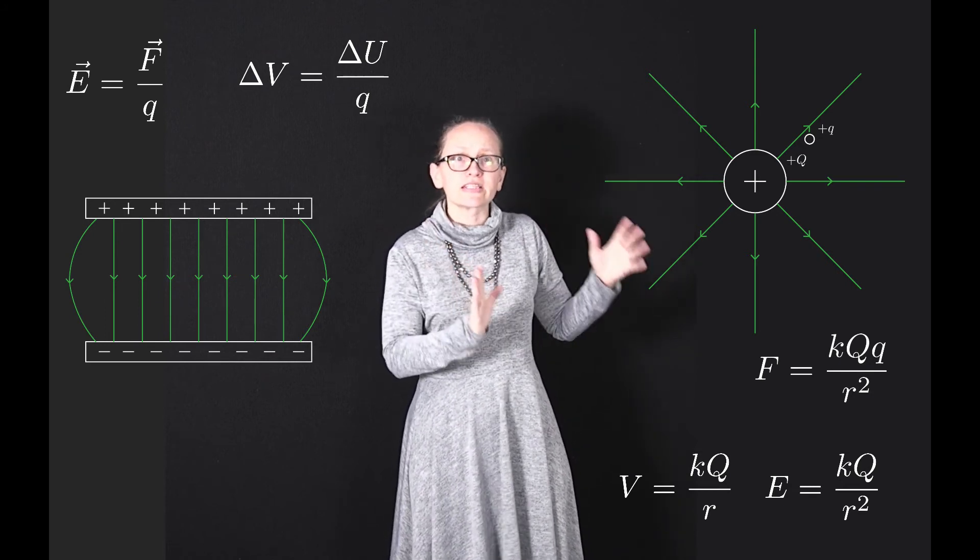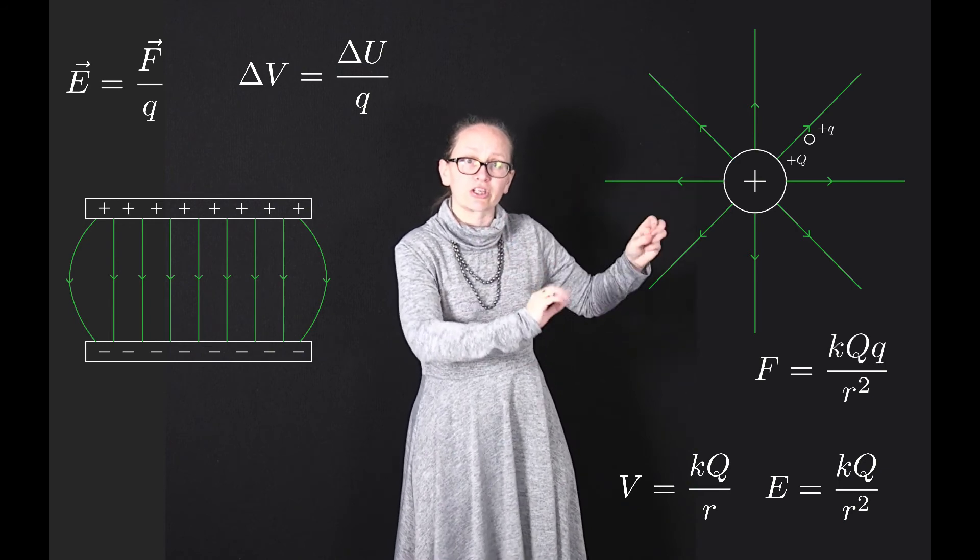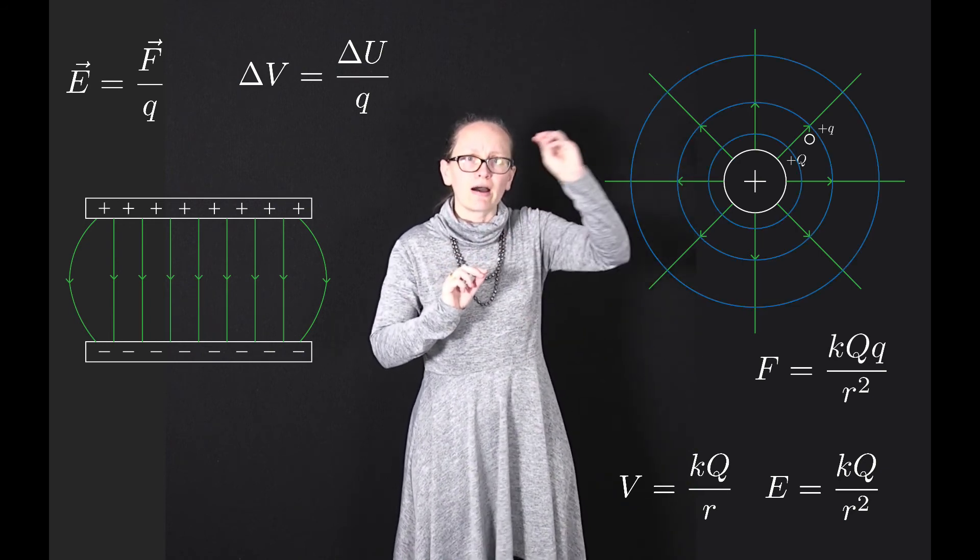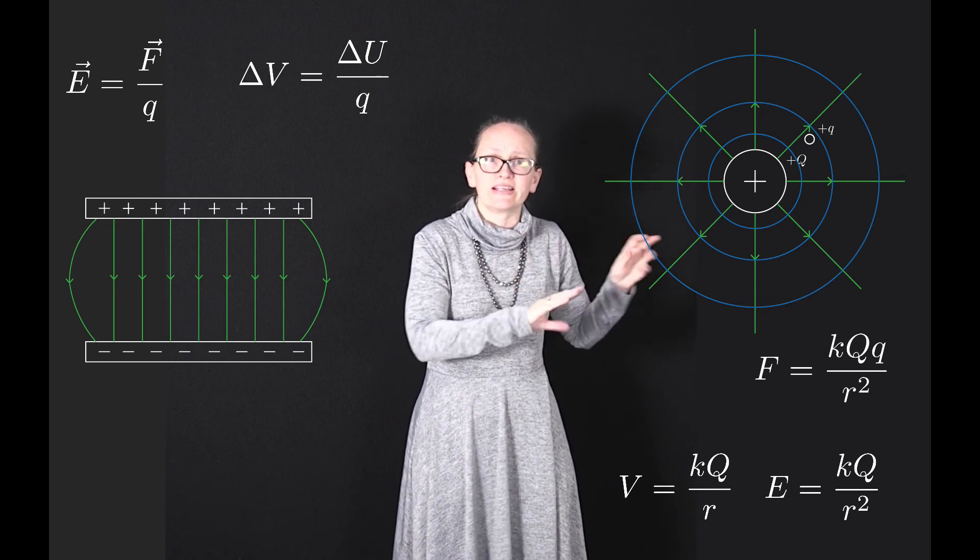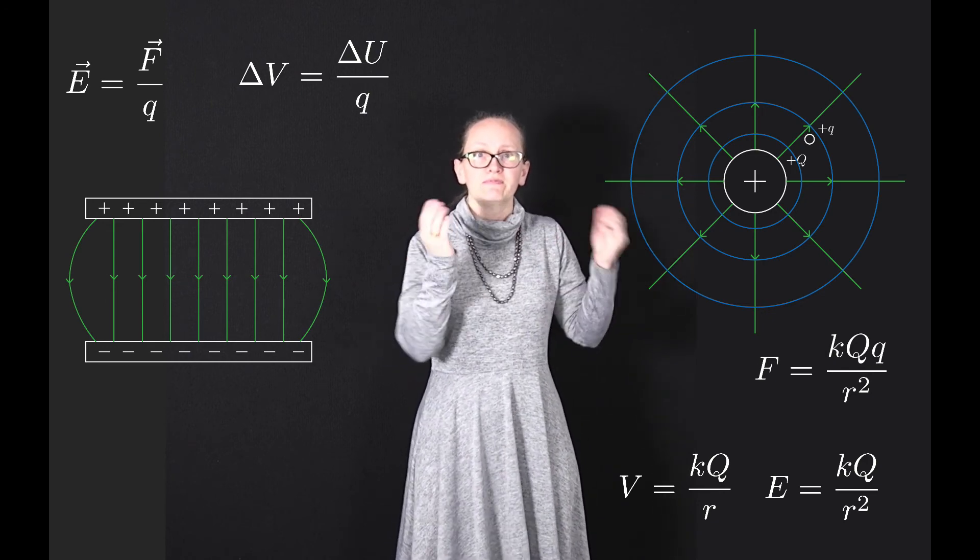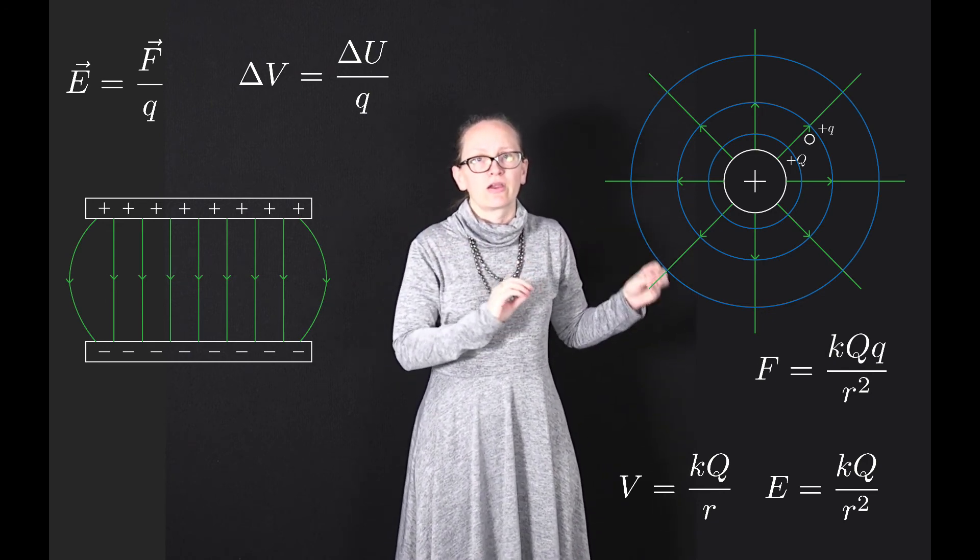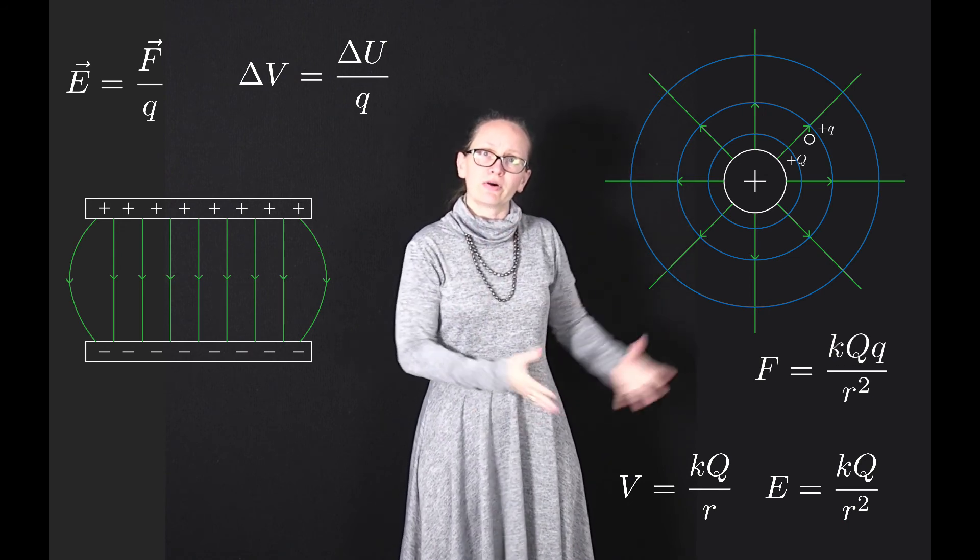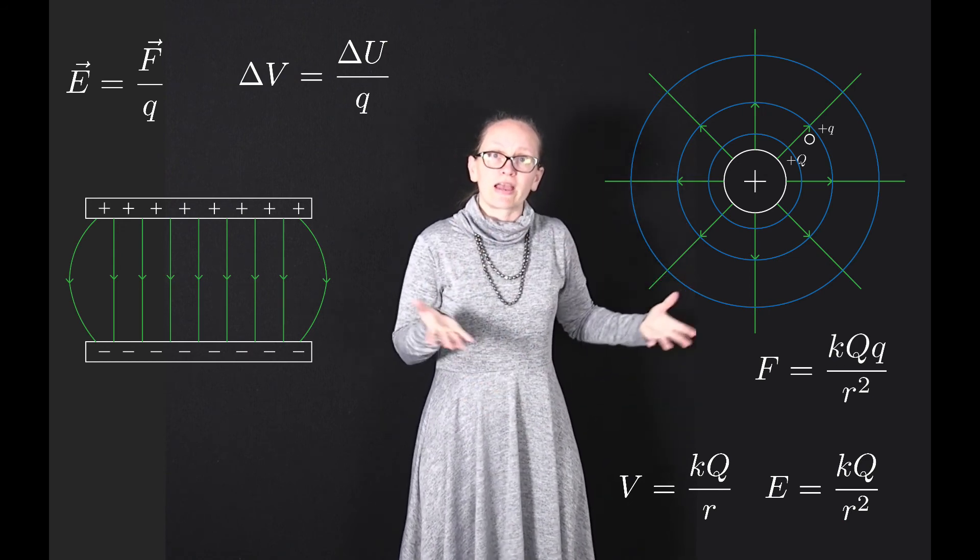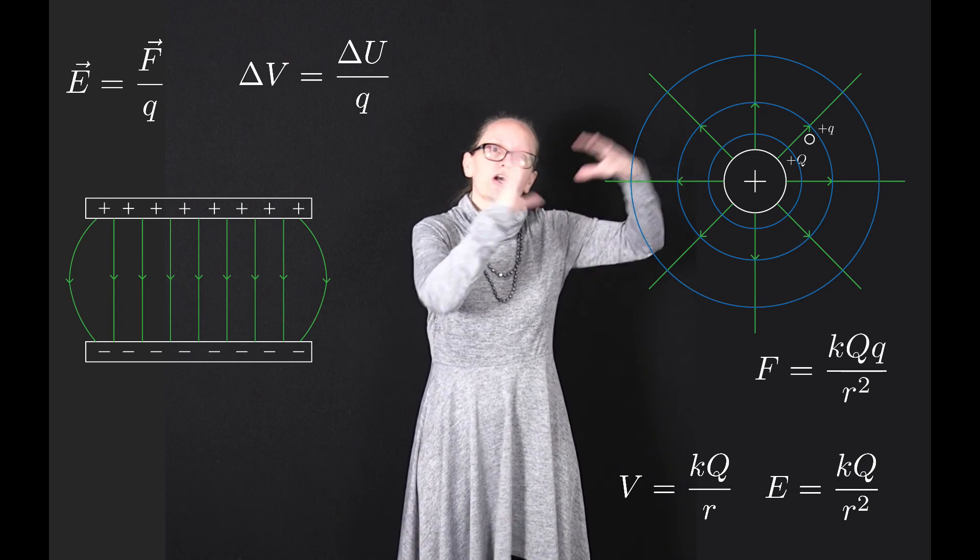As you'll see from that equation, every point around our point charge at the same radius is going to have the same voltage or electric potential. So in this case around a point charge we've got equipotential surfaces which are spheres.